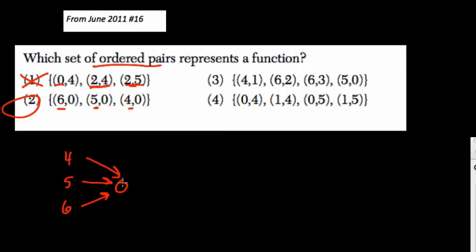You could not have, let's say, 4, if you look at this problem in particular, map to 0 and then map to some other number as well. Each x value was only mapped to one y value.